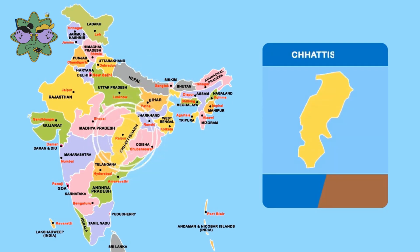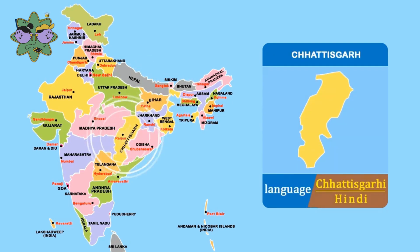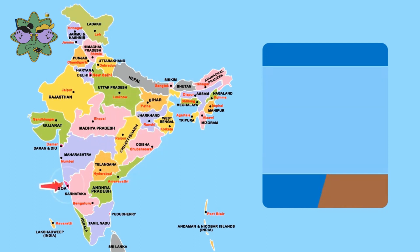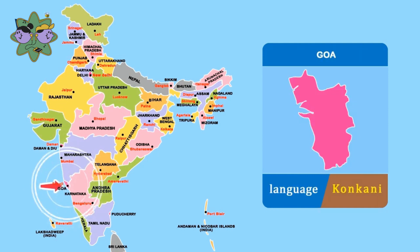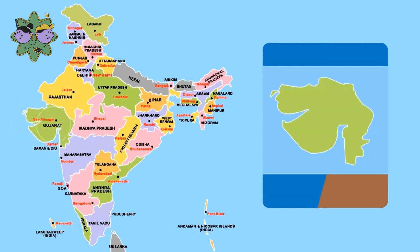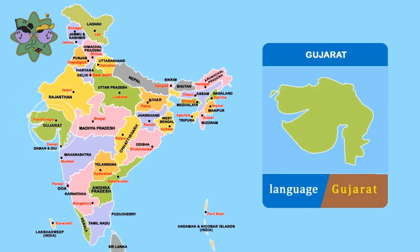Chhattisgarh, Language Chhattisgarhi and Hindi. Goa, Language Konkani. Gujarat, Language Gujarati.